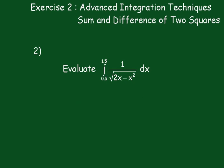Right, number 2, evaluate the integral between 1.5 and 0.5 of 1 over the square root of 2x minus x squared dx. Now again, just pause the video.